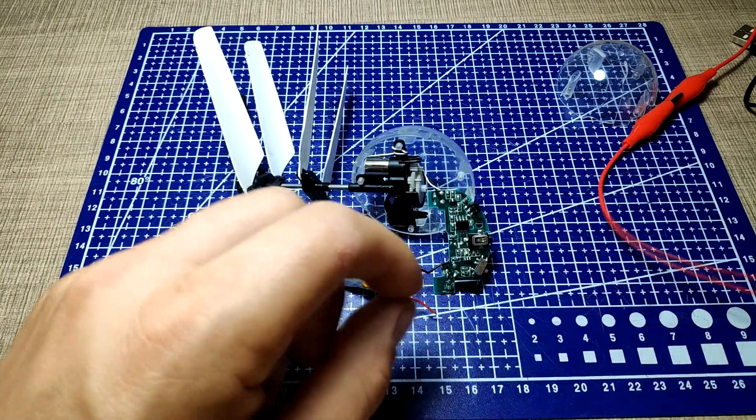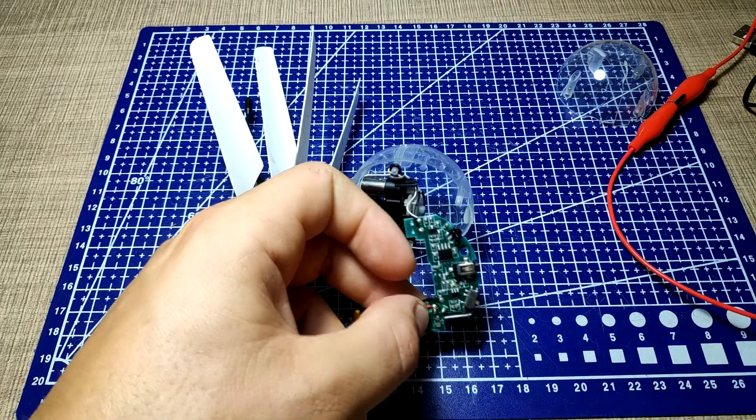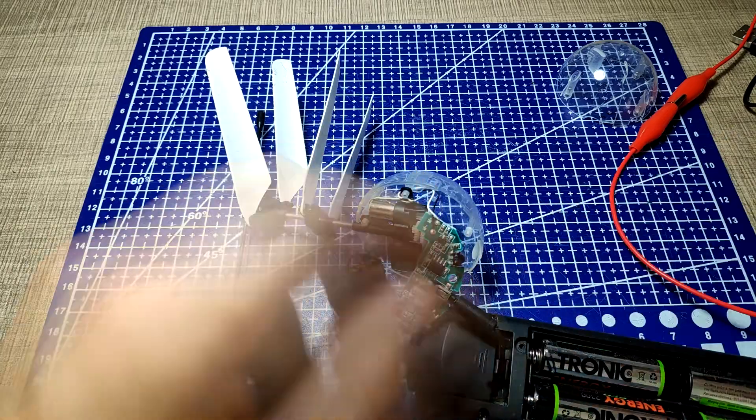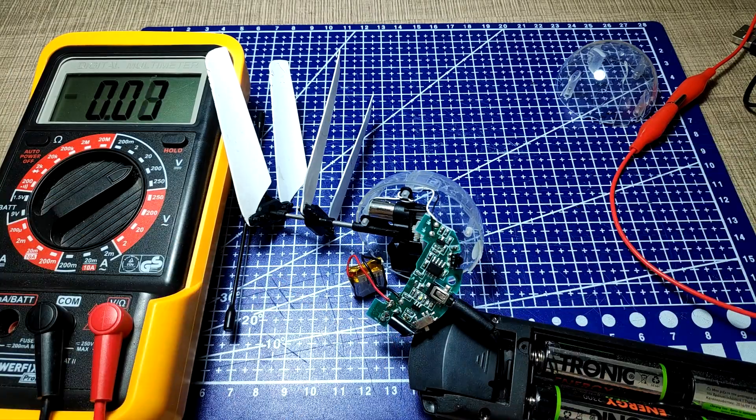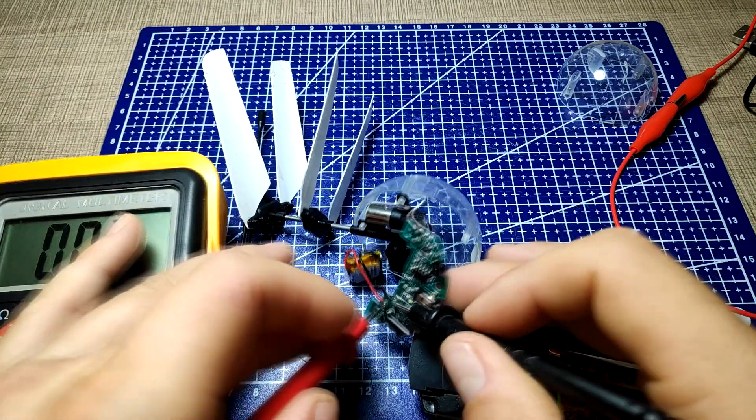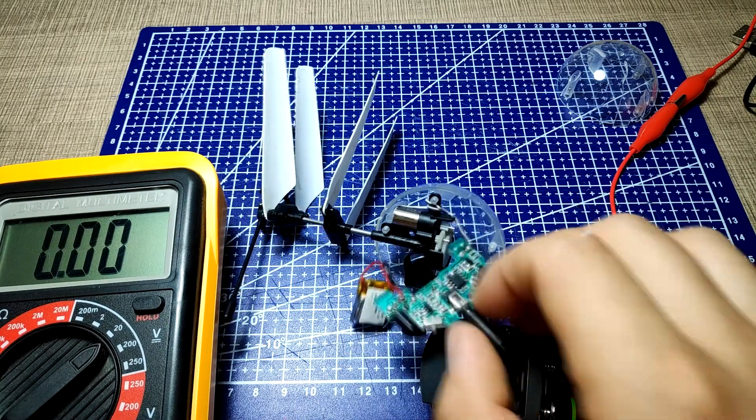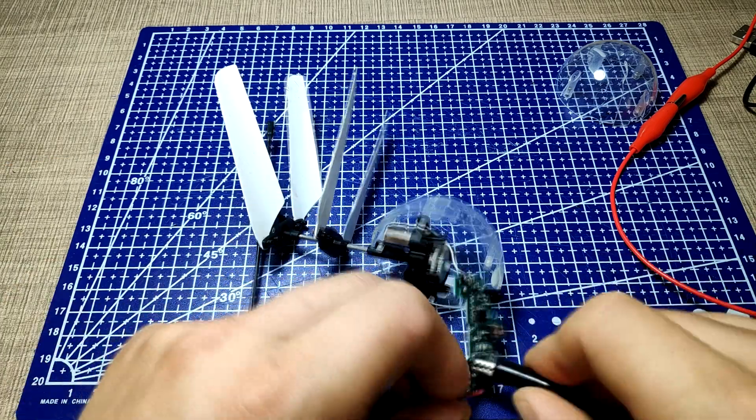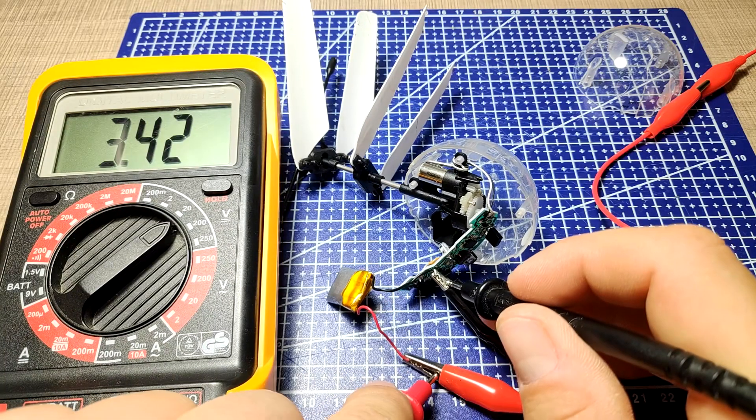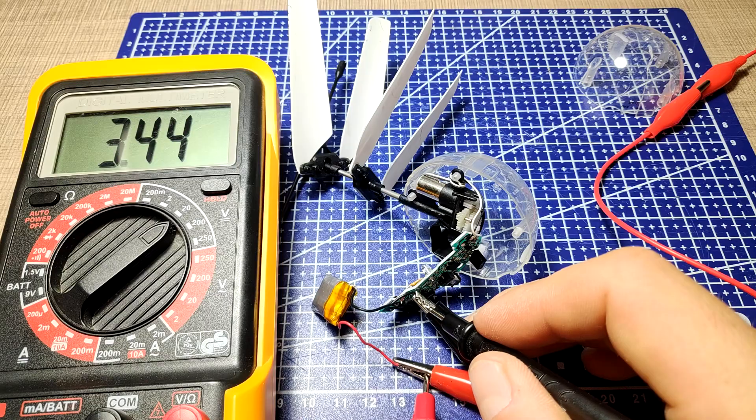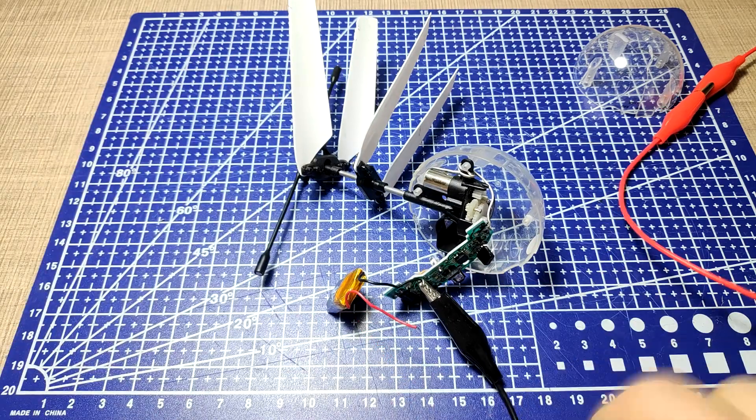After a while I measured the voltage on the battery again and it started slowly climbing. At all times I monitored the battery temperature as this process forces energy to it without any control or monitoring as with the usual charging process. Several times I disconnected the charger and soldered the battery to the board to try it out but unfortunately this did not help. Something else was going on that I was not able to understand.